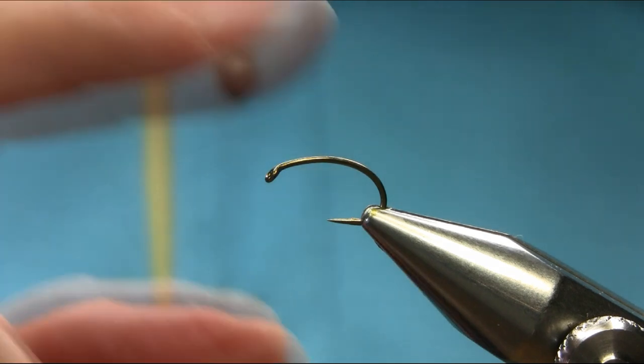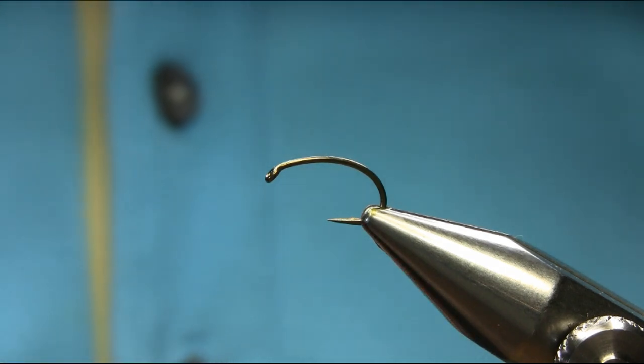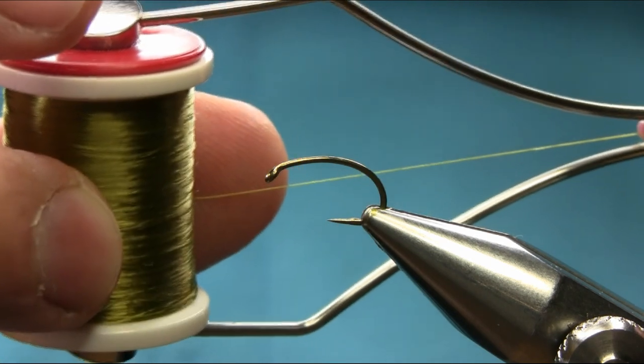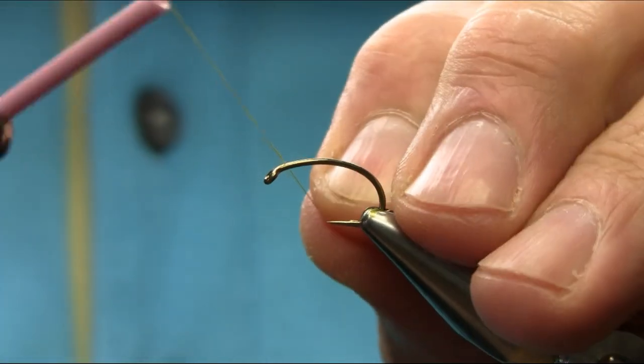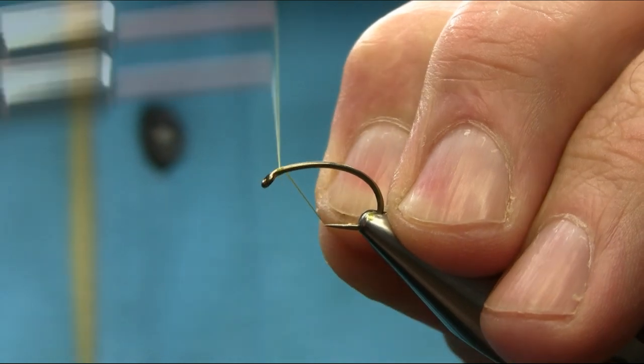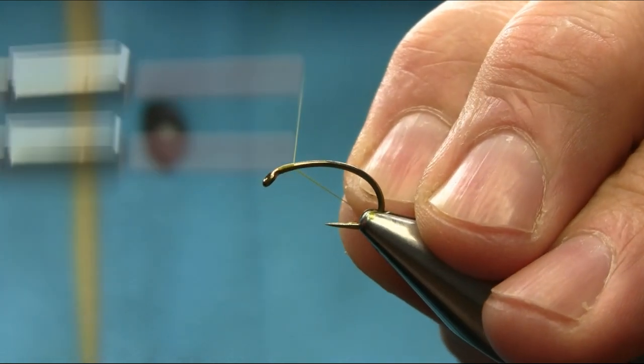Hello friends, this is size 10 Barblos Grubhawk, and the thread I'm using is olive, light olive. I'm going to start below the eye using touch and turn.